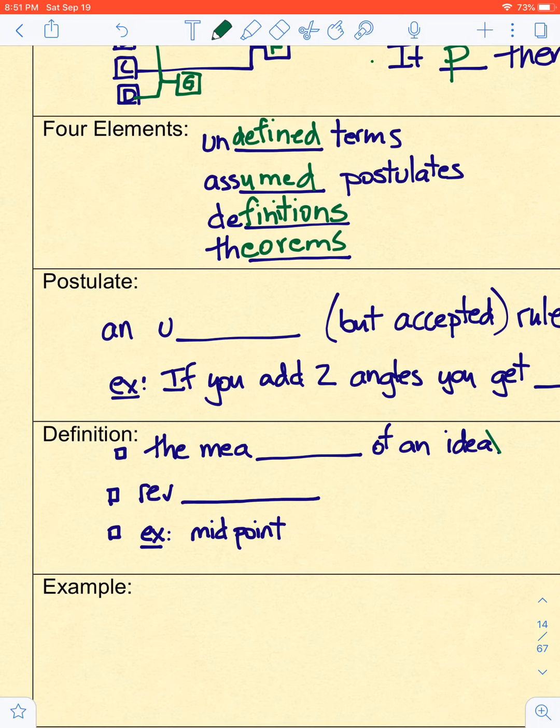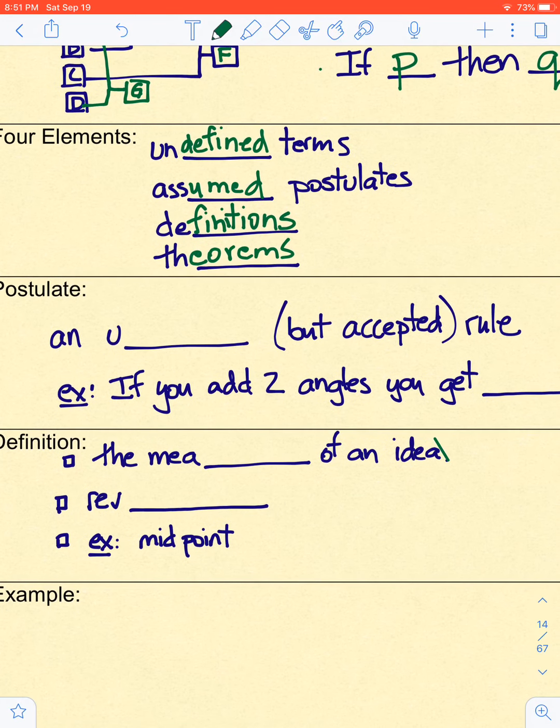If two angles, you add them up, then guess what? You get a third angle. That's called the angle addition postulate. And we have a few of them that we use from time to time.